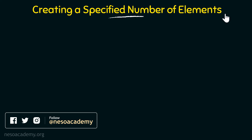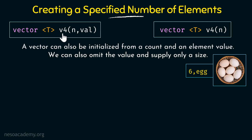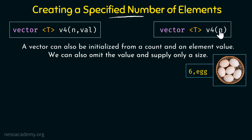Next we have creating a specified number of elements. A vector can be initialized from a count and an element value, and sometimes we can omit the value and supply only a size. The syntax is: vector followed by the type within angle brackets, then the name v4, and within parentheses either n comma val — where n is the size and val is the element value — or just n, which specifies only the count without a value.